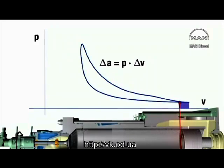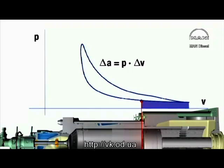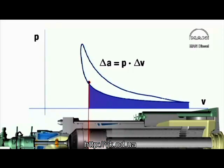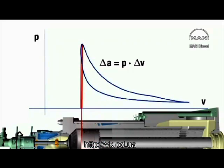The amount of work transmitted to the piston during a full engine revolution must therefore be the difference between that delivered during the compression and that received during the expansion.